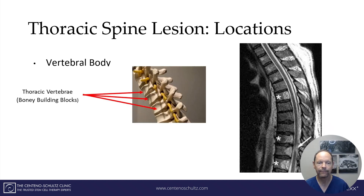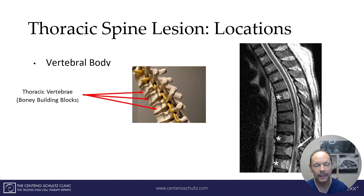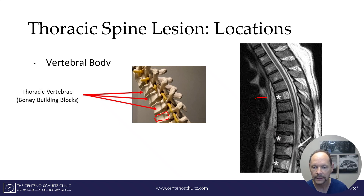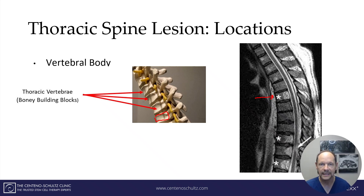First and foremost, a lesion can occur in the vertebral body — those building blocks that stack one on top of the other that constitute the spine. Here you can see the bony steps, these are the building blocks. And here to the right I've depicted a lesion actually in the vertebral body. This is a hemangioma.